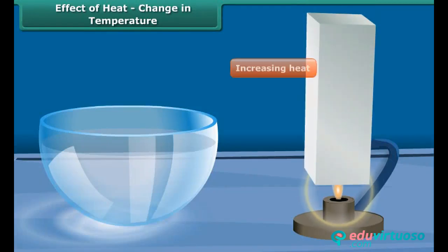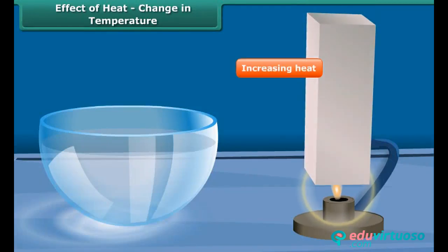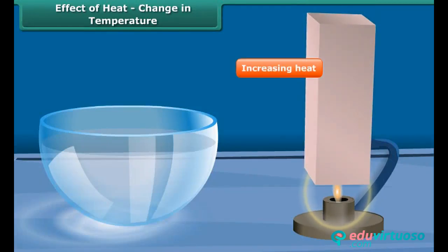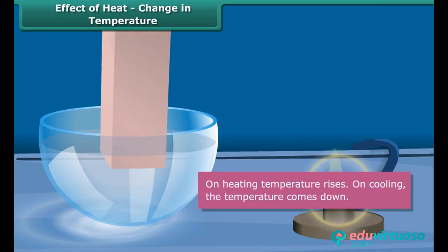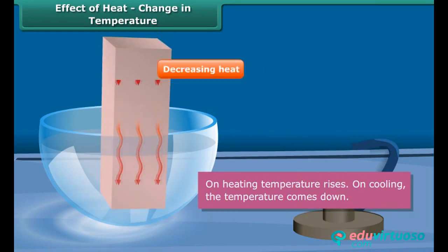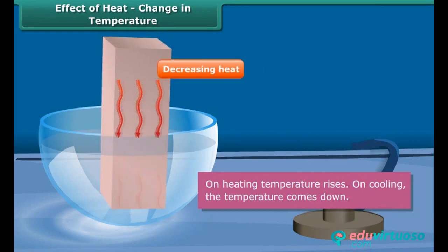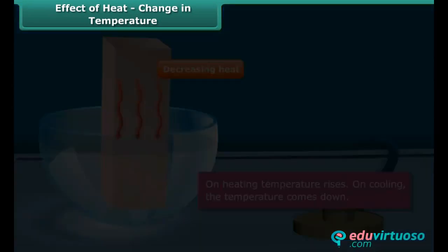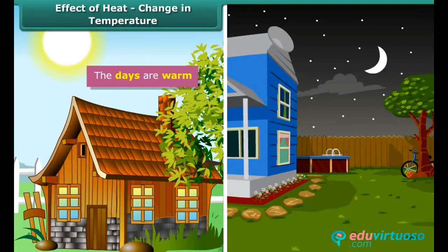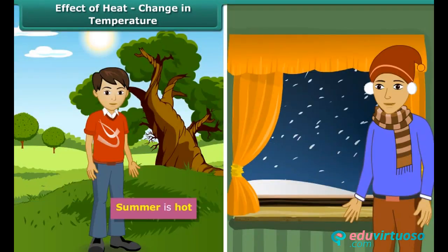We observe a change in temperature on heating. On heating, temperature rises and on cooling, the temperature comes down. In nature, the sun's energy brings about a change in temperature. The days are warm, while the nights are cool. Summer is hot, winter is cold.